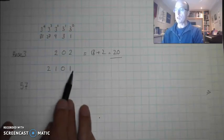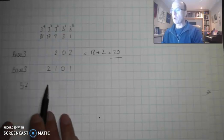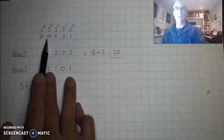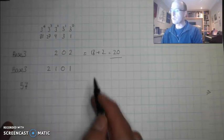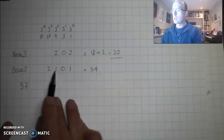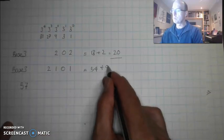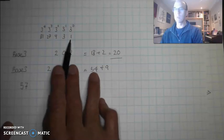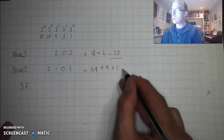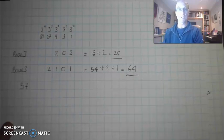Next, 2, 1, 0, 1 in base 3. This time I've got 2 in my 27's column, so 2 lots of 27 is 54. I've got 1 in my 9's column, and I've got 1 in my 1's column. So 54 plus 9 plus 1 is 64 in decimal.